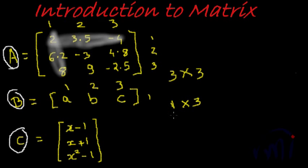Let's take one more example. Matrix C has only one column but has three rows 1, 2, and 3. This would be called a matrix of order 3 by 1.